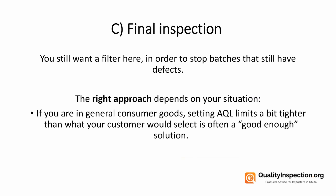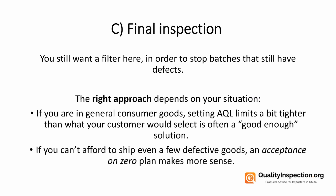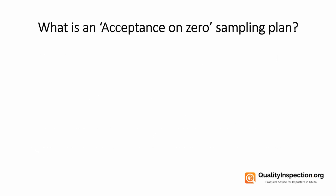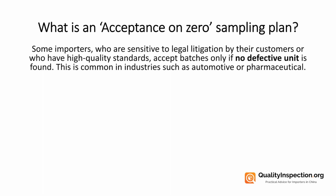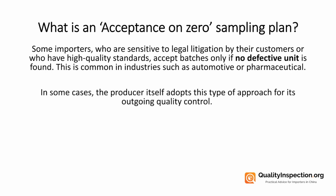If you're in general consumer goods, setting AQL limits a bit tighter than what your customer would select is often good enough. However, if you can't afford to ship even a few defective goods, an acceptance on zero plan makes far more sense. Some importers who are sensitive to legal litigation or who have high quality standards accept batches only if no defective unit is found. This is common in industries such as automotive or pharmaceutical, and in some cases the producer itself adopts this approach for its outgoing quality control.